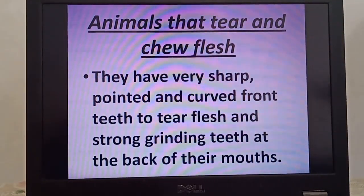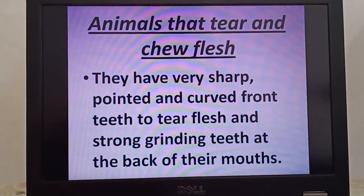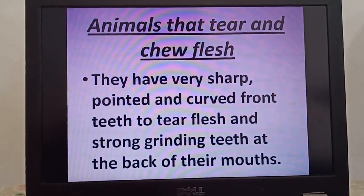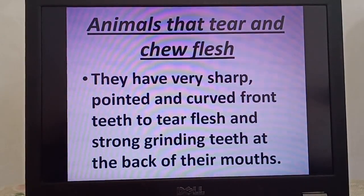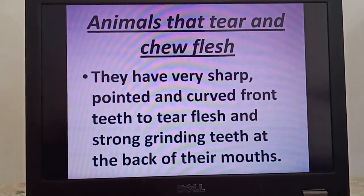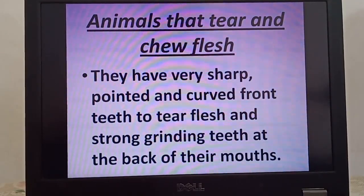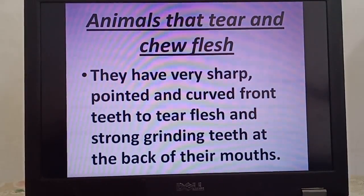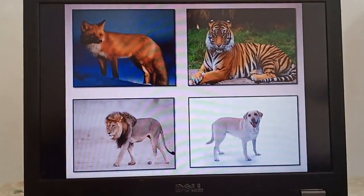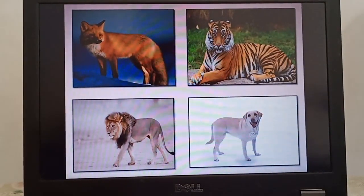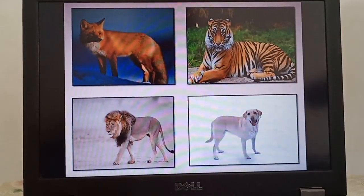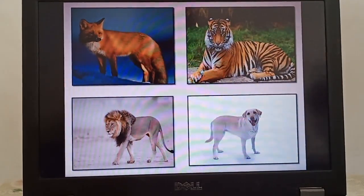There are some animals that eat the flesh of other animals. They have very sharp, pointed, and curved front teeth to tear flesh. They also have strong grinding teeth at the back of their mouth to chew the meat and bones. Examples of animals that tear and chew flesh are fox, tiger, lion, and dog.